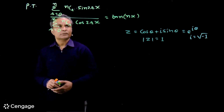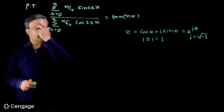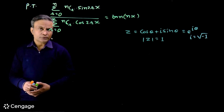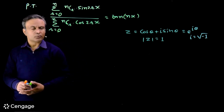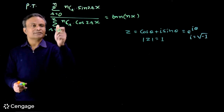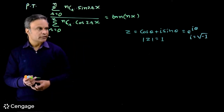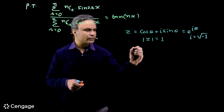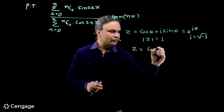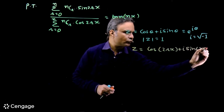In this question we have to prove that a certain ratio equals tan(nx). In the numerator we have the sum of the series nCr multiplied by sin(2rx) for r = 0 to n, and in the denominator we have the sum of nCr multiplied by cos(2rx) for r = 0 to n. Looking at the factors cos(2rx) and sin(2rx), we consider the complex number with argument 2rx: cos(2rx) + i·sin(2rx).